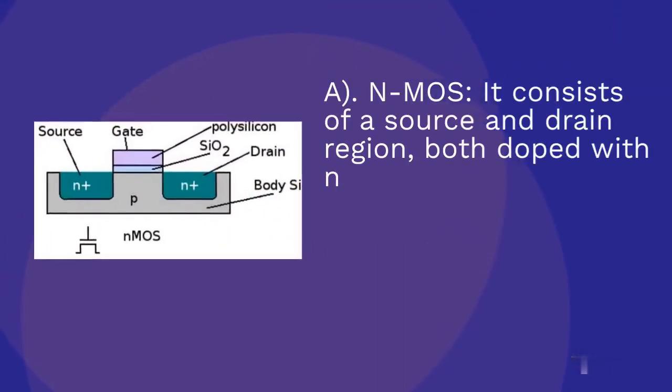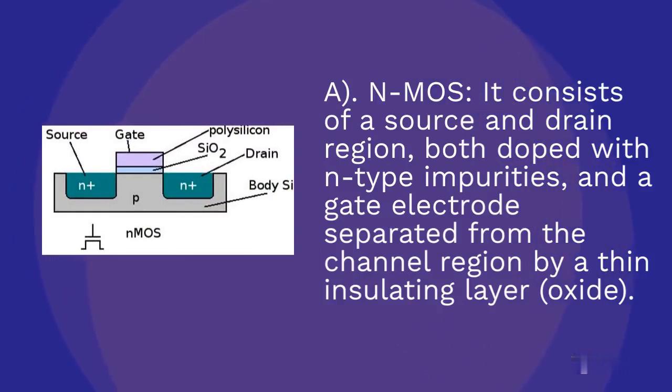N-MOS consists of a source and drain region, both doped with N-type impurities, and a gate electrode separated from the channel region by a thin insulating layer, oxide.